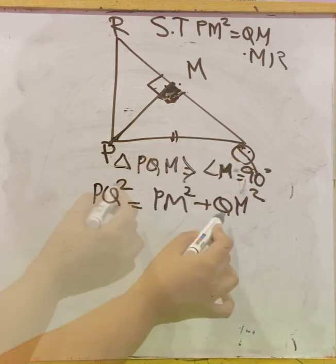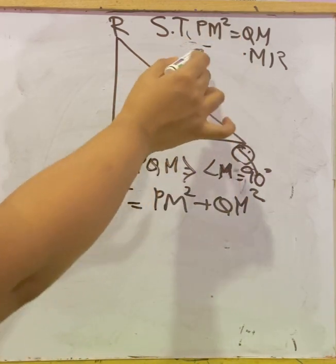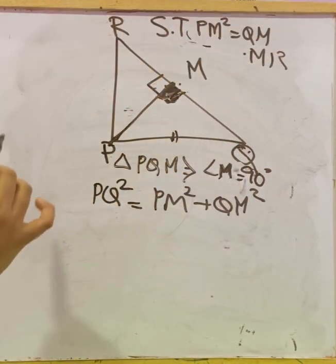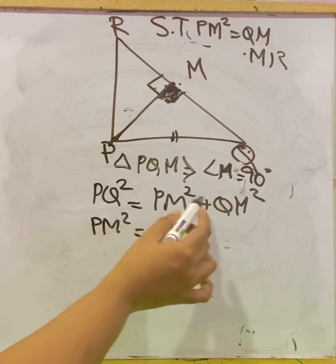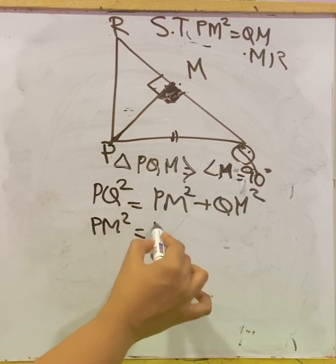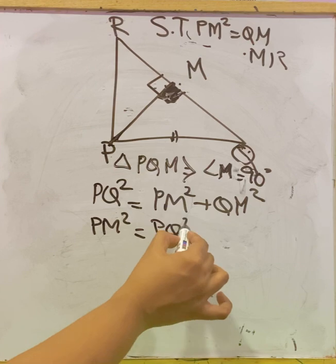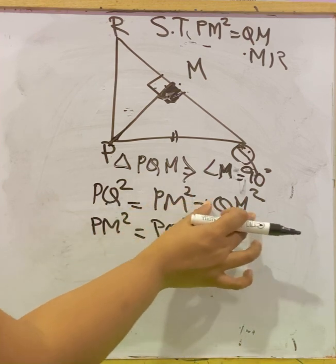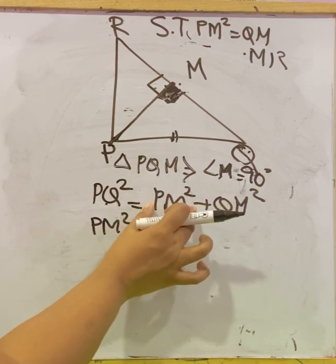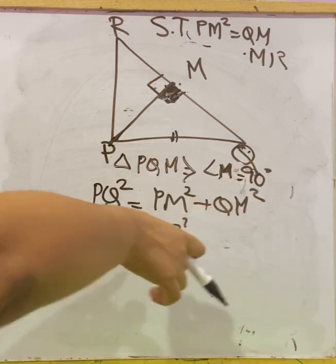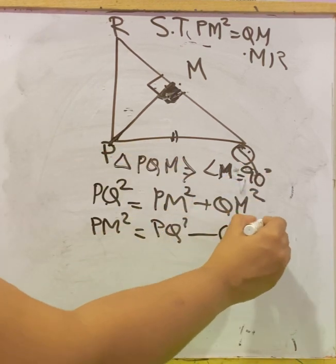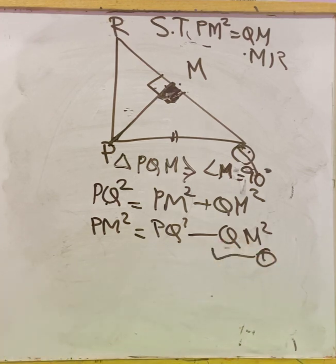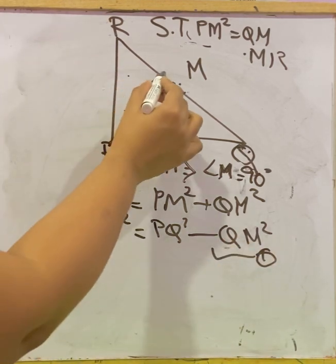We rearrange because we need PM² on one side. So: PM² = PQ² − QM². Let this be equation (1). Here QM² was with PM² on the left, so taking it to the right it becomes minus QM².